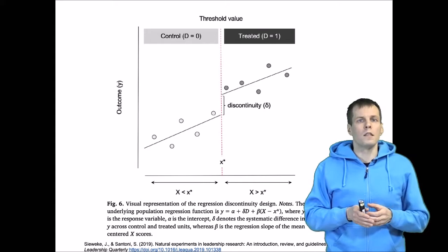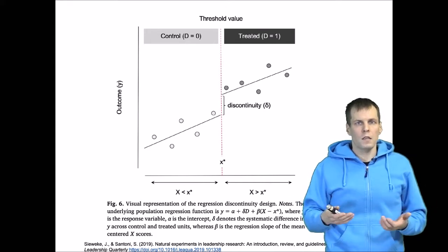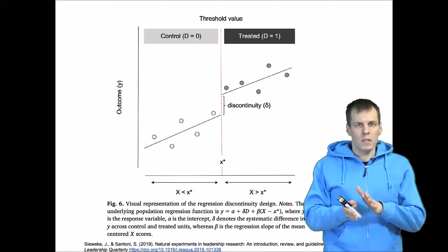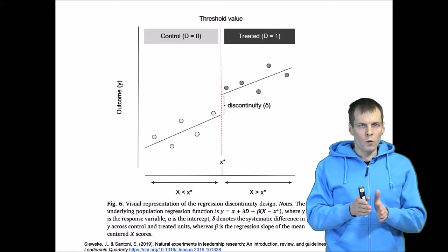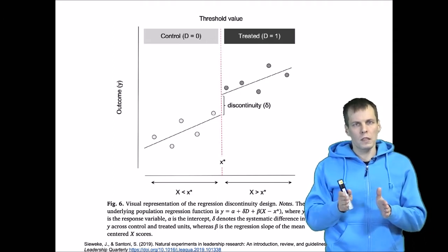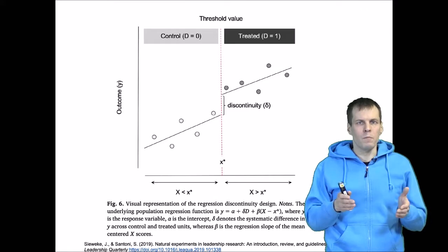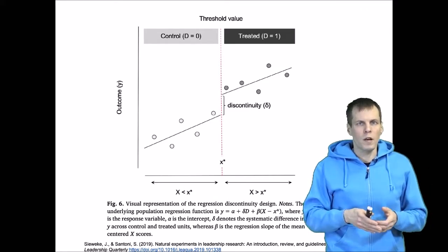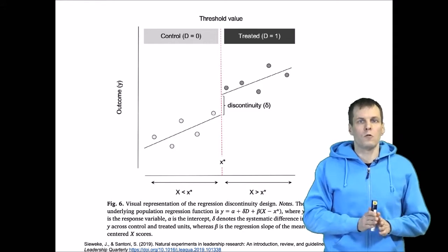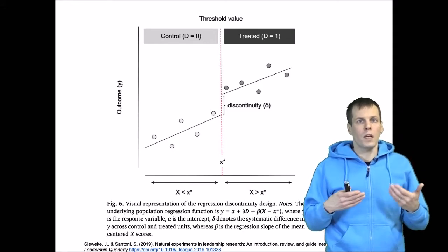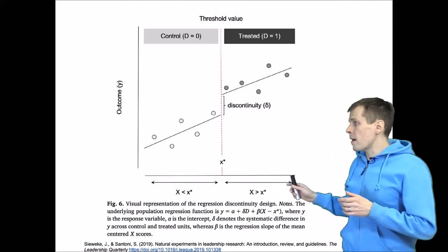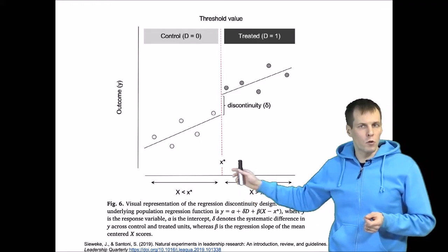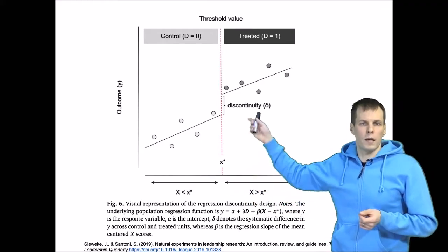Another example is voting: if we have two candidates and the candidate receives 49.9% versus 50.1% of the vote, the candidate's popularity is about the same, but there's a big difference because the threshold for winning is at 50% when there are two people in the election. So we have this variable X that determines selection and a clear cutoff which separates who goes to control and who goes to treatment, and then we can estimate the causal effect.